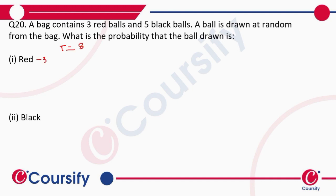There are three red balls, so the probability of finding a red ball is going to be three by eight. There are five black balls, so the probability of finding a black ball is going to be five by eight.